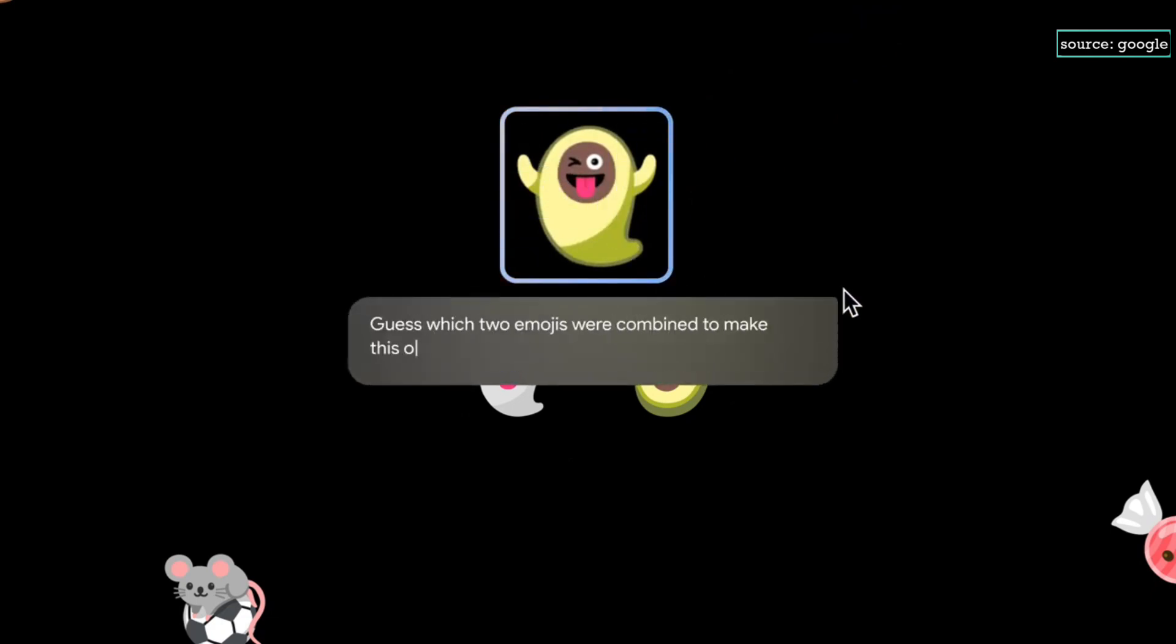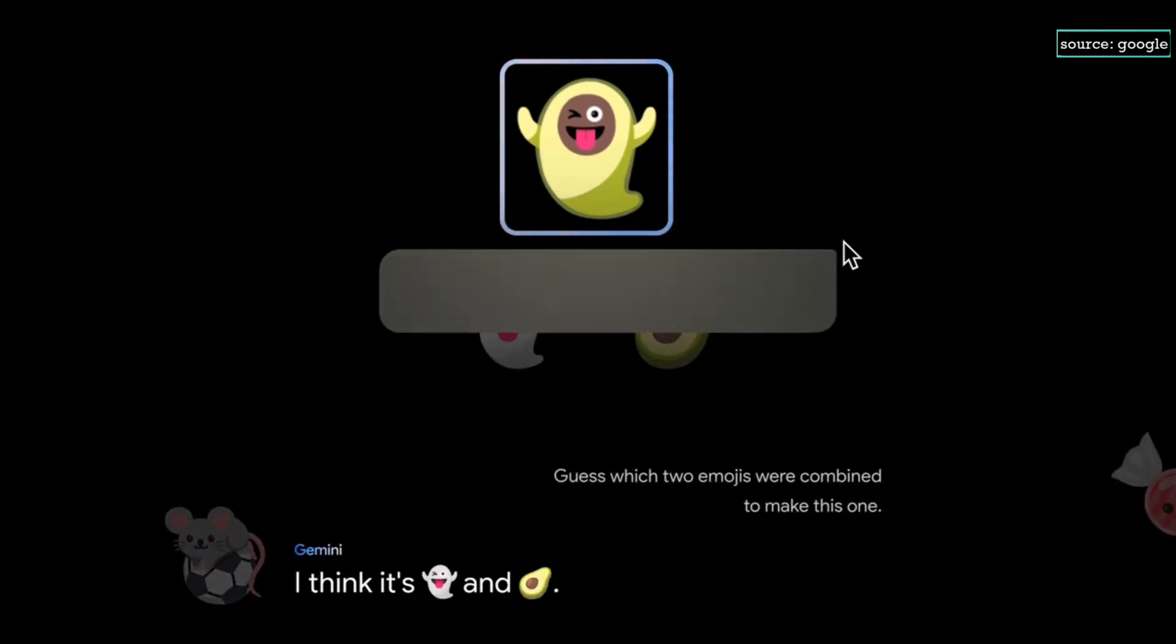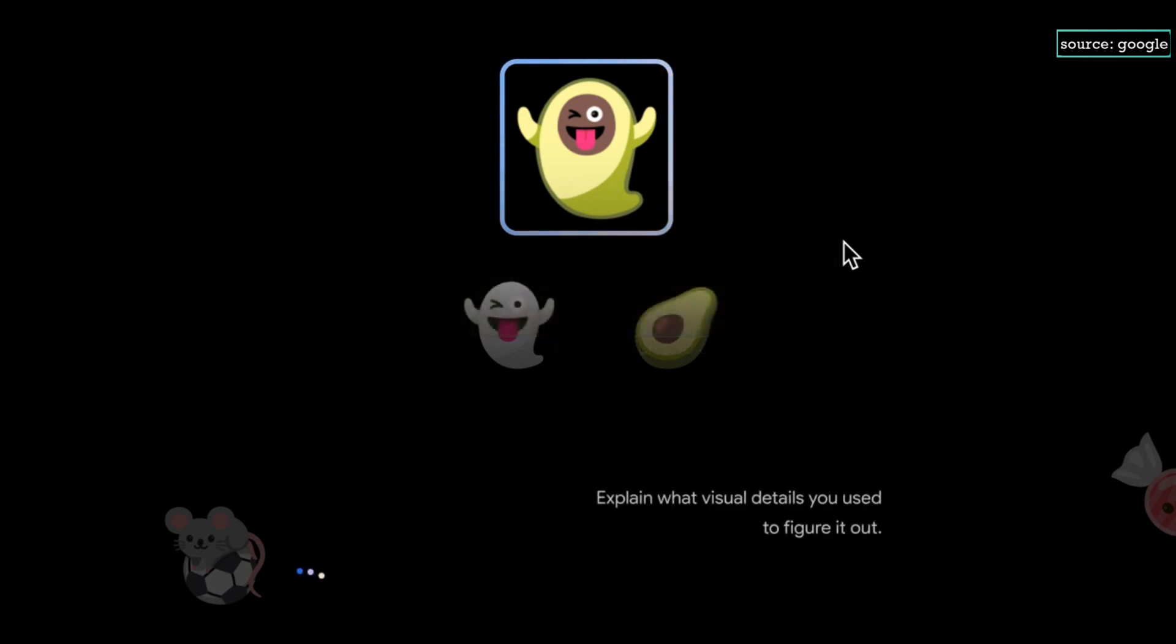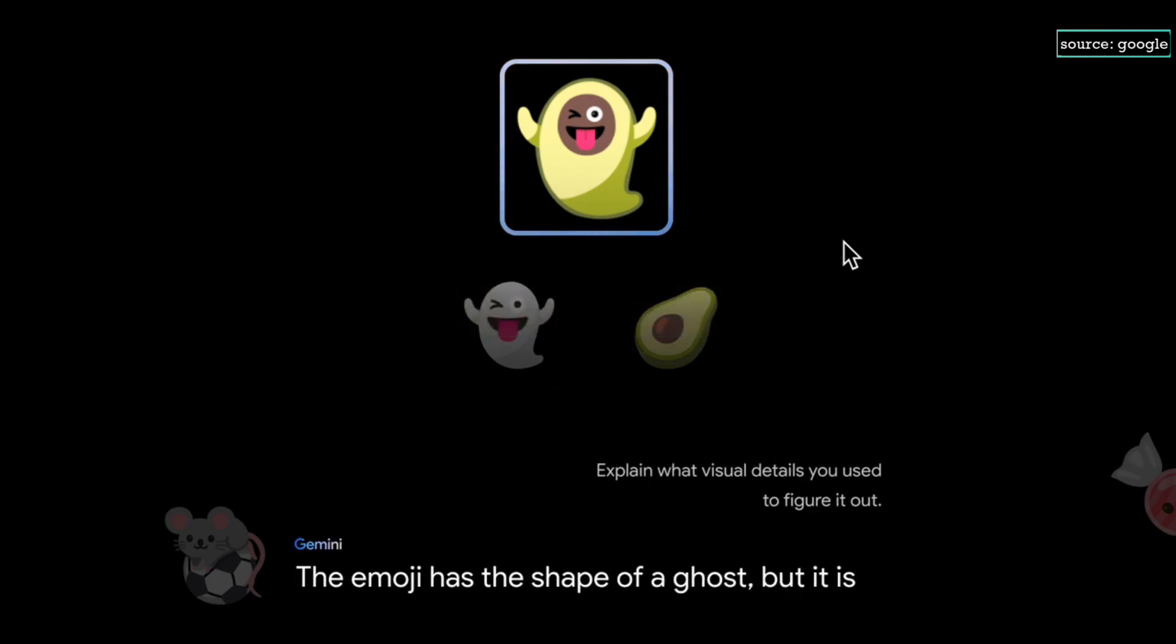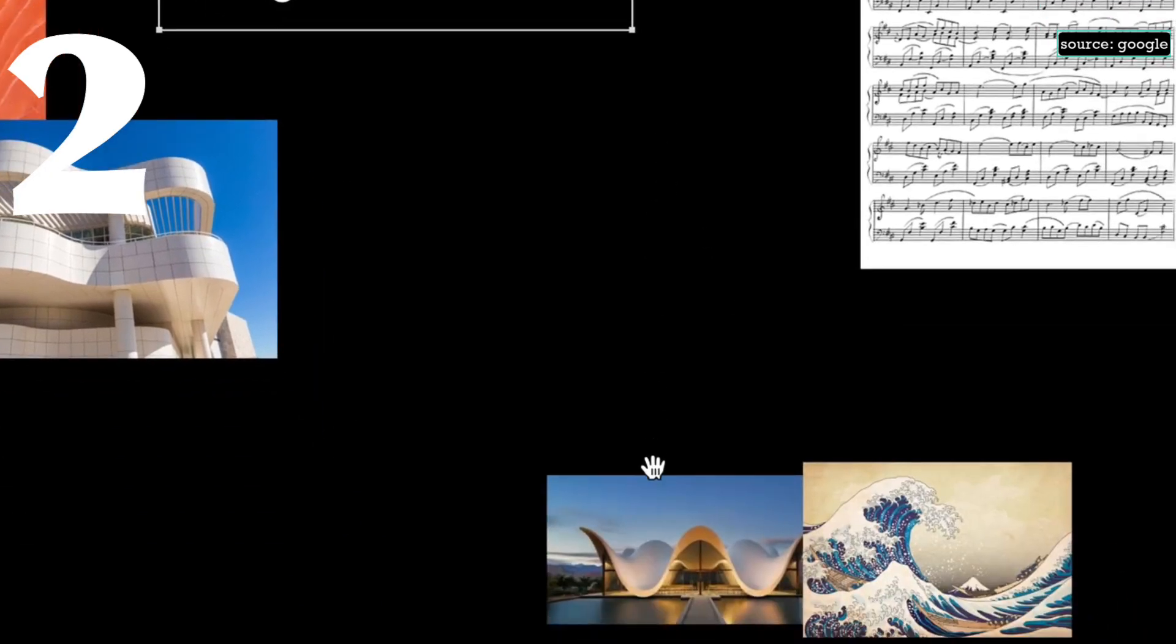We'll see if it can guess this one. I think it's ghost and avocado. Nice. Now let's see if it can explain the visual details it used. The emoji has the shape of a ghost, but it is green and has a big brown pit.